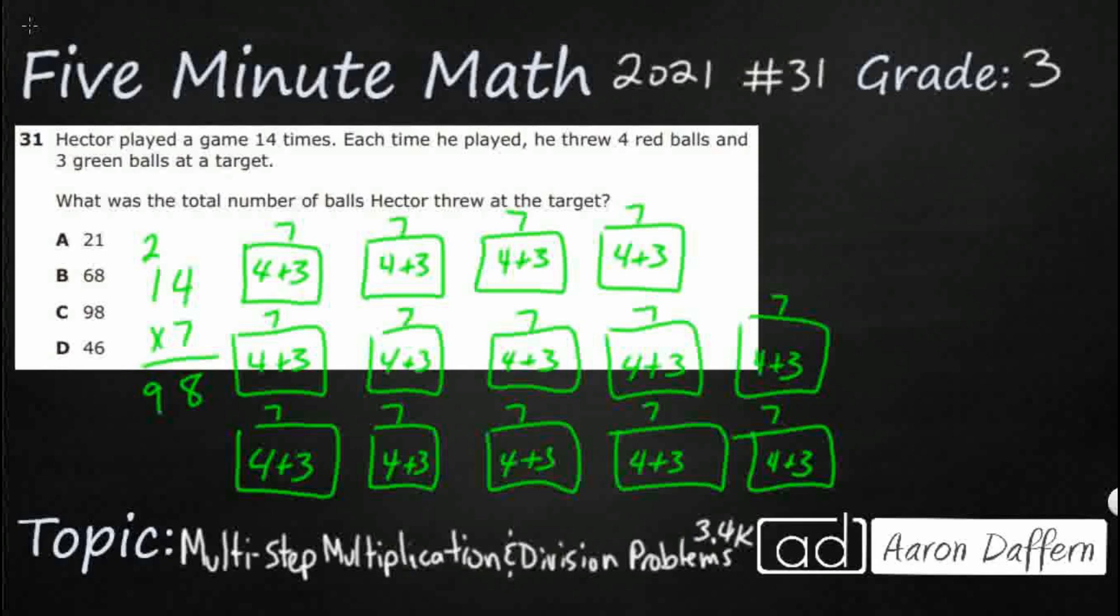What if we broke it up? What if we said that I wanted to multiply the number of the red balls? So, that's going to be times four. And I wanted to multiply the number of the green balls. That's going to be times three. And add those two up. I wonder if that would work.